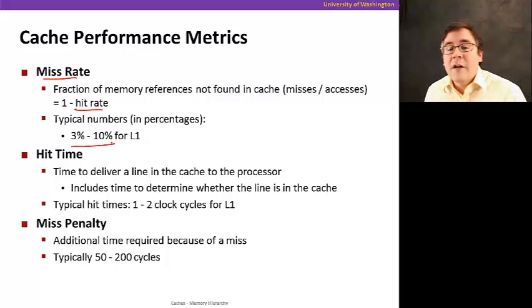And the typical numbers that we see for the first level of cache, which is the level of cache closer to the processor, we'll see what that means in more detail in a second, but for L1, the one that's closer to the processor, the typical number is between 3 and 10%.